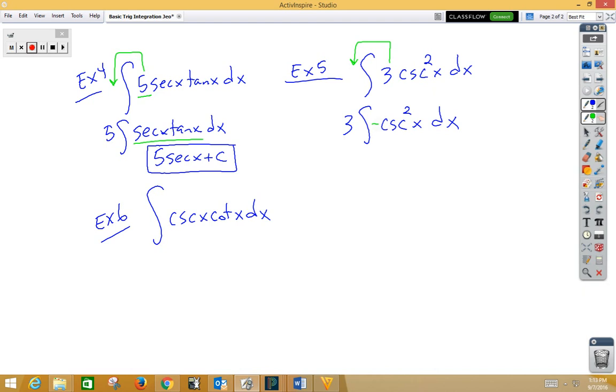We're missing the negative. If I want to include a negative on the inside, I push a negative outside so as not to change the problem. And now this gives me negative three cotangent x plus C. Don't forget your plus C.